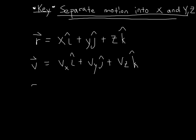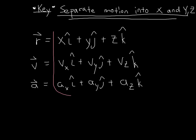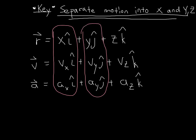We can also generalize acceleration: ax in the i-hat direction, plus ay in the j-hat, plus az in the k-hat direction. We now have general vectors for all possible dimensions. The key advantage is we can separate these vectors and only operate on what happens in each direction. The i-direction is separate from j, which is separate from k. This means multiple steps per problem, but the approach is exactly the same as previous chapters.